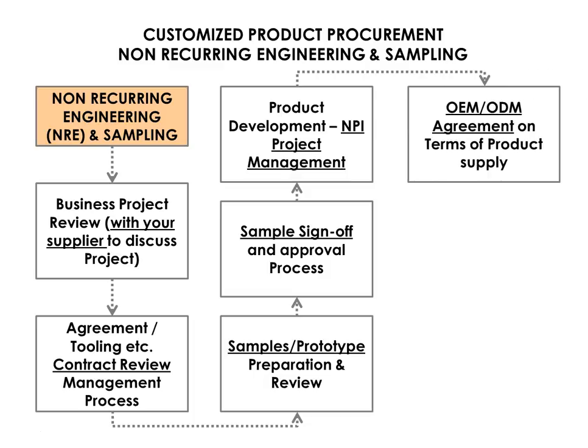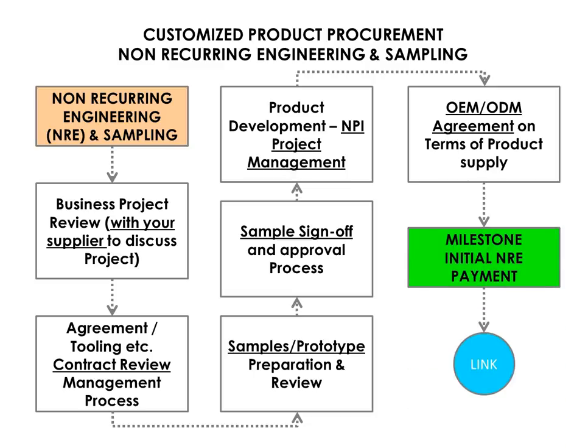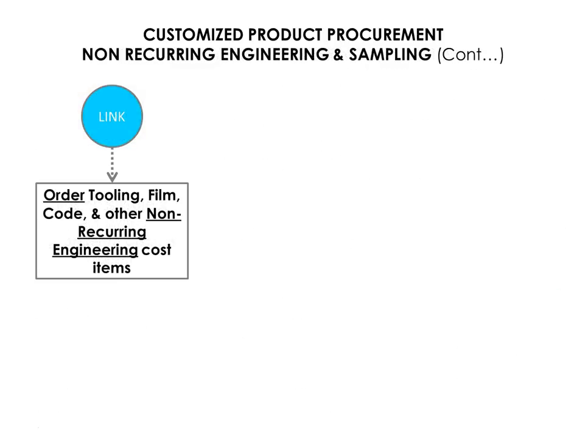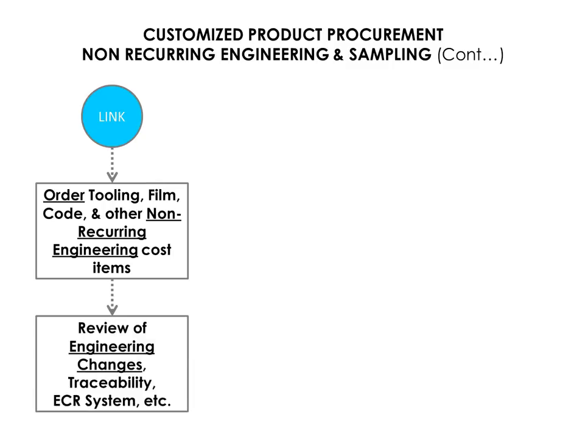An OEM-ODM agreement should be created that covers every detail of the product supply. This will be your manufacturing contract once you are ready to hit the green light. Once these steps have been completed, it is time to place the order and pay the initial amount set against the PO for your NRE items. Once you place the orders for tooling, films or code, the information provided would have been officially released through your document control procedure.